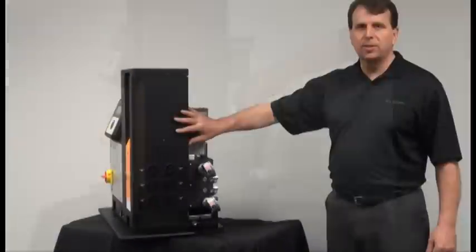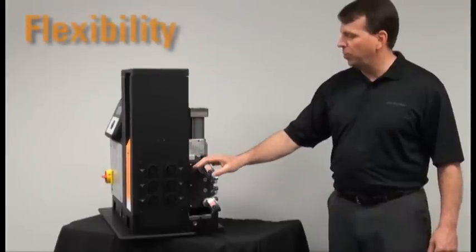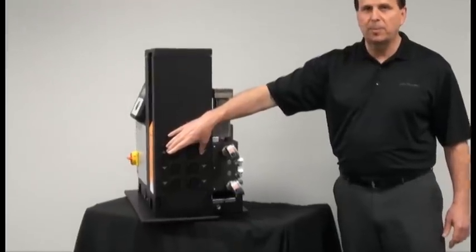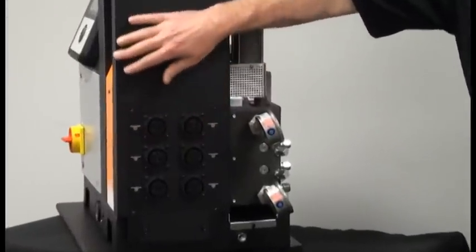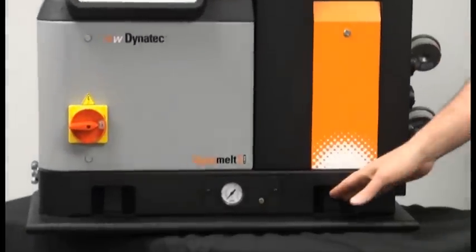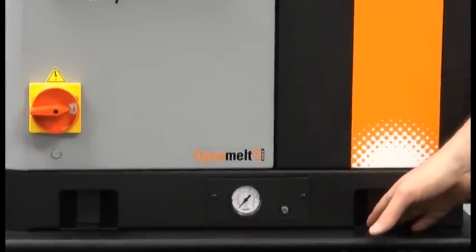The Dynamel S is designed to have one of the smallest footprints in the industry. It can control up to six different hoses with six different applicator assemblies. The four mounting points are easily accessible on the front and back.